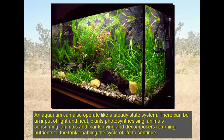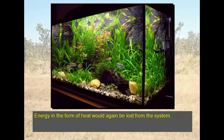An aquarium can also operate like a steady state system. There can be an input of light and heat, plants photosynthesizing, animals consuming plants, and animals dying and decomposing — returning nutrients to the tank and enabling the cycle of life to continue. Energy in the form of heat would again be lost from the system.